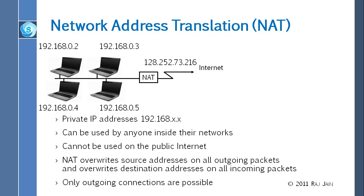There are three address sequences defined for private use. 192.168 is the most common, so everyone remembers it. There is also 172.something and 10.something. These happened to be the addresses available at the time the decision was made — there is no other significance to those particular numbers.